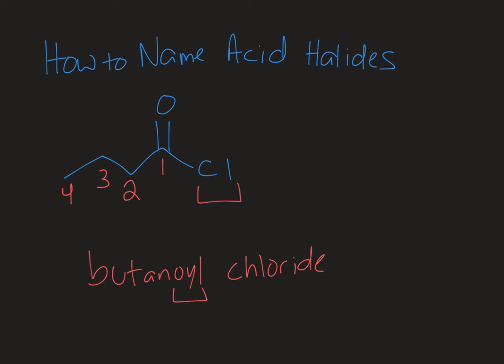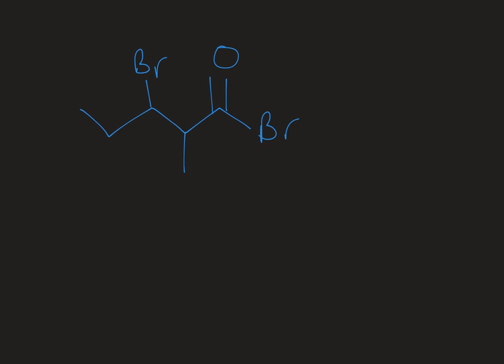So this tells me that I have an acid chloride and then the butte part tells me that I have four carbons in that chain. Alright so I want to do one more example.